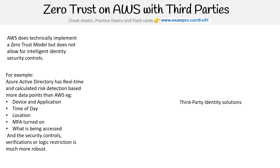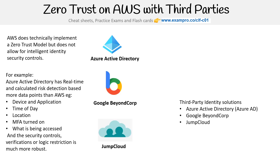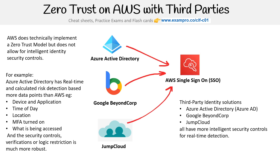So this is where third-party solutions are going to come into play. You have Azure Active Directory, Google BeyondCorp, JumpCloud — all these have more intelligent security controls for real-time detection. The way you would use these is they would be your primary directories, and you'd use single sign-on to connect those directories to your AWS account. That's how you'd access those AWS resources and get this more robust functionality.